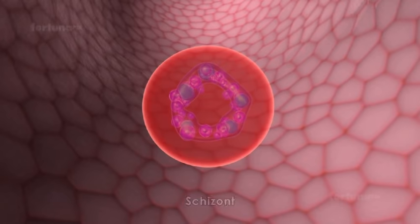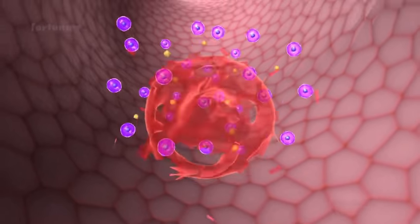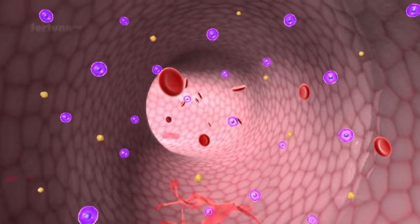The Schizonts will produce numerous Merozoites which will rupture the Red Blood Cells and attack fresh Erythrocytes.